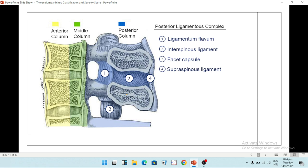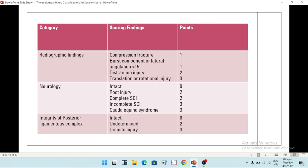So what is this posterior ligamentous complex? This is a part we discussed in the start of the video as well. The posterior ligamentous complex contains the ligamentum flavum, the intraspinous ligament, the facet capsule, and the supraspinous ligament. All four of these things make up the posterior ligamentous complex. If it is intact, then it favors non-surgical treatment.